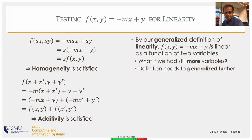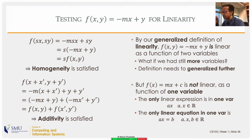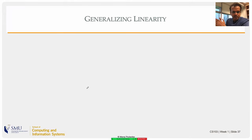By the generalized definition, f(x, y) = -mx + y is a linear function of two variables. To reiterate: f(x) = mx + c as a function of just one variable is not linear. The only form in which a function of one variable can be linear is f(x) = ax, where a and x are real numbers. So the only linear equation in one variable — in the form expression equals constant — is the very simple: ax = b.